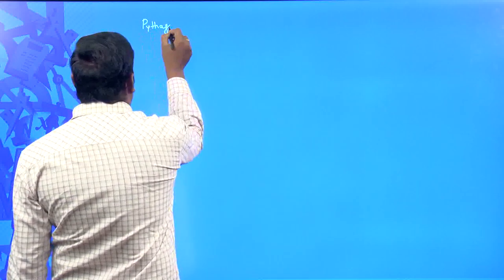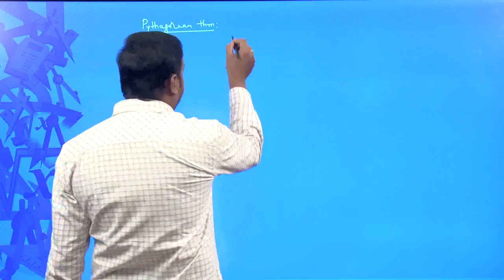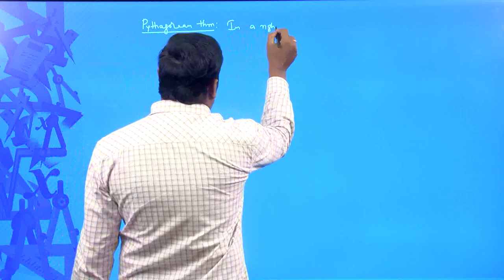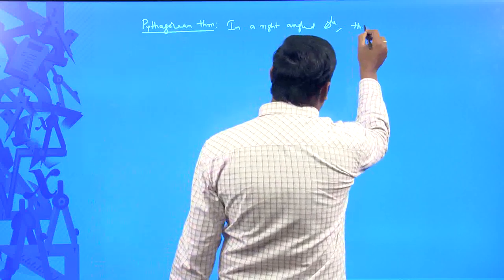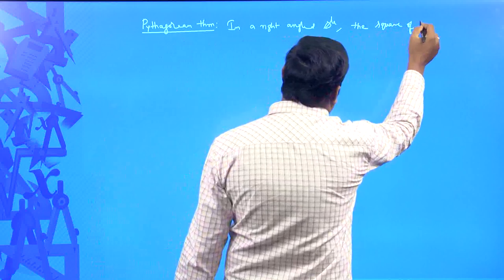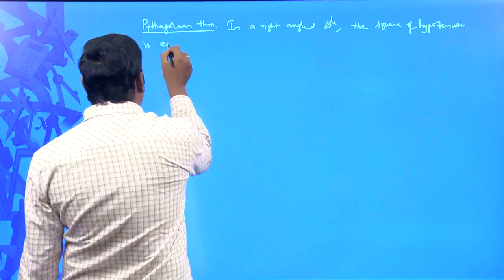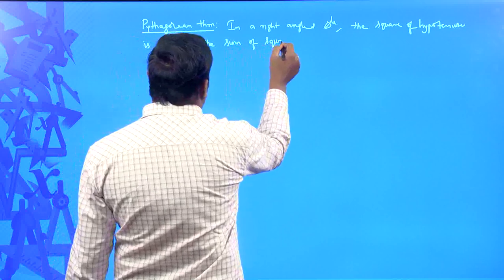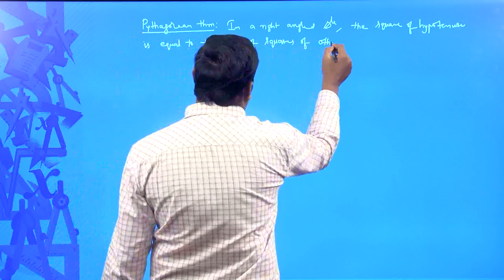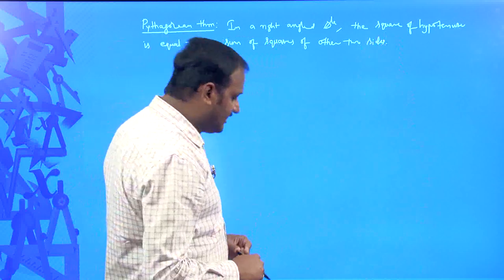This Pythagoras theorem statement is all about the Pythagorean theorem. The statement of Pythagoras theorem is: in a right angled triangle, the square of the hypotenuse is equal to the sum of squares of the other two sides. This is what you call Pythagoras theorem. For that, let me draw one right angled triangle.